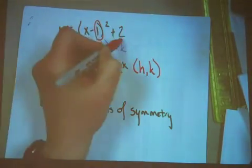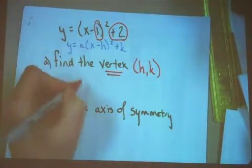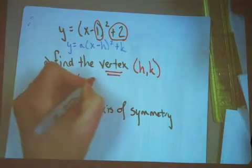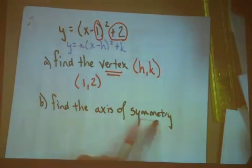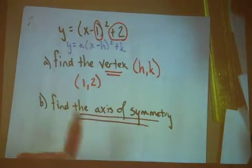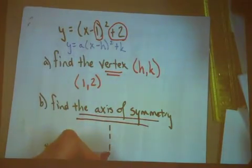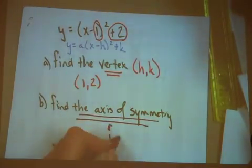Notice that 1 is in the location of the h and 2 is where the k is, so this vertex happens to be the coordinate pair (1,2). To find the axis of symmetry, remember that the axis of symmetry is always a nice vertical line which always starts with the equation x equals.